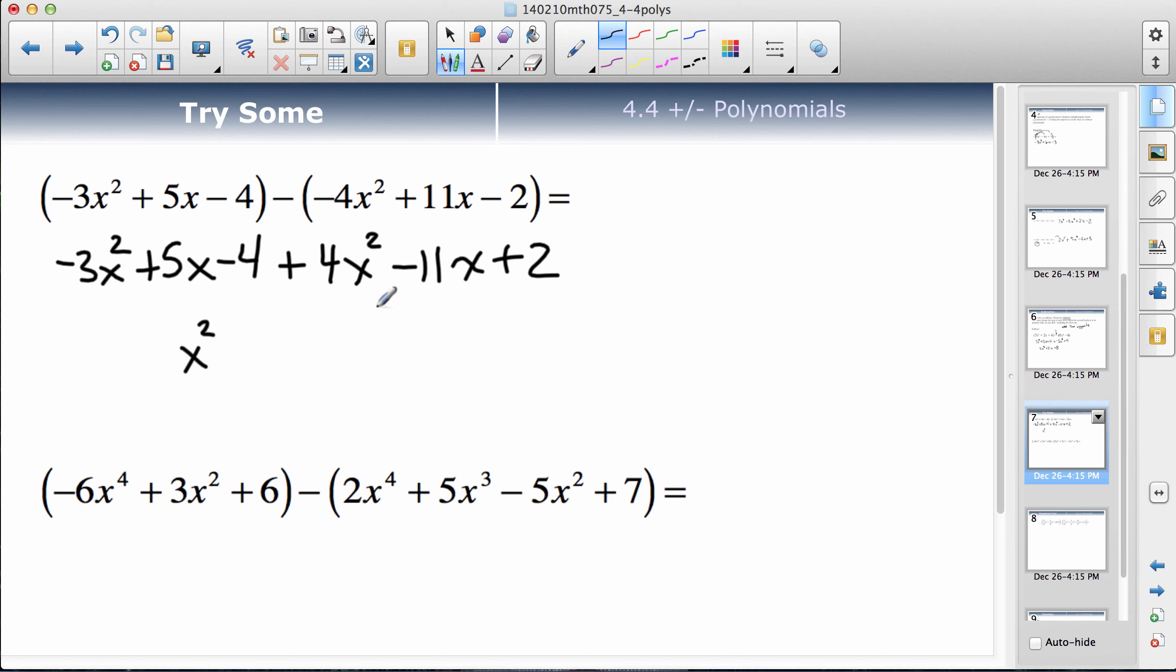Up 5, lose 11, so I'd be down 6x. Down 4, up 2, so I'd still be down 2. So that would be the sum of that.